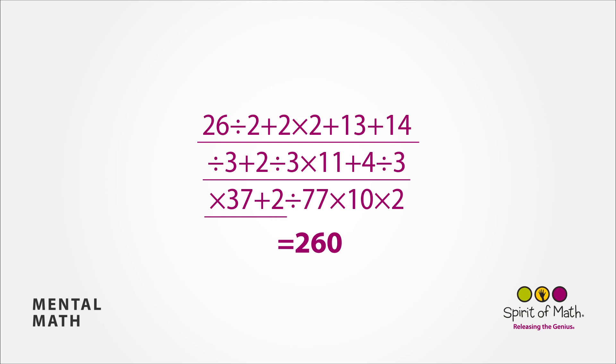Add 2 is 1001. Divided by 77 gives you 13. Multiply that by 10 is 130, and multiply that by 2 at the end is 260.